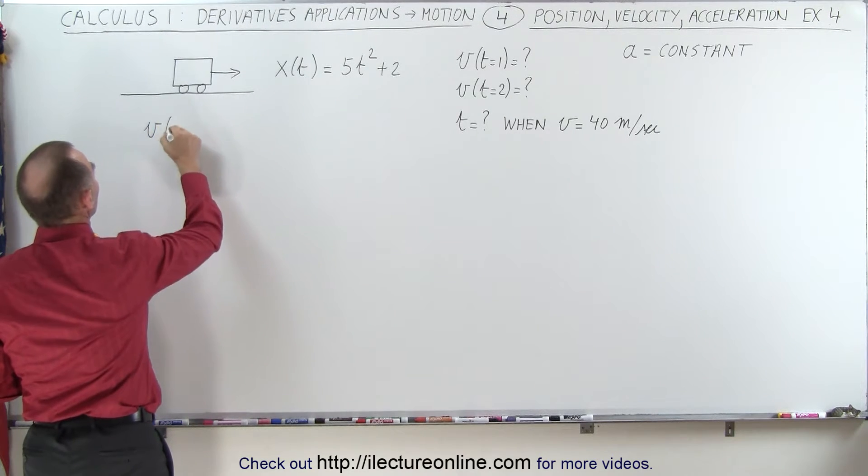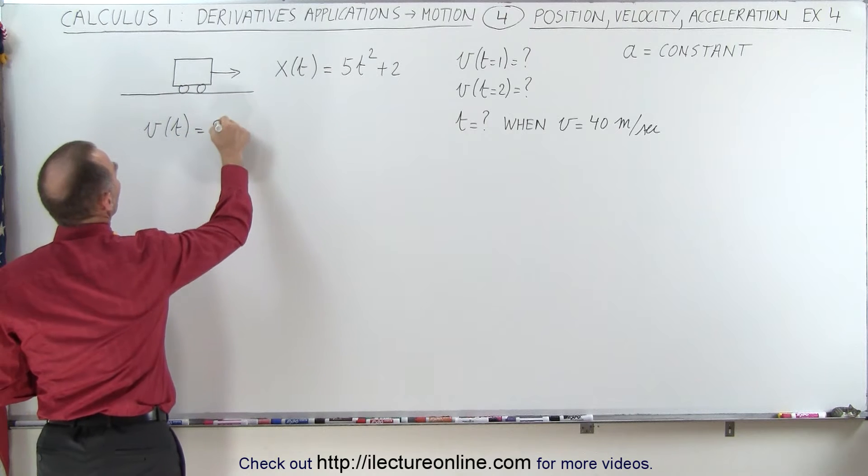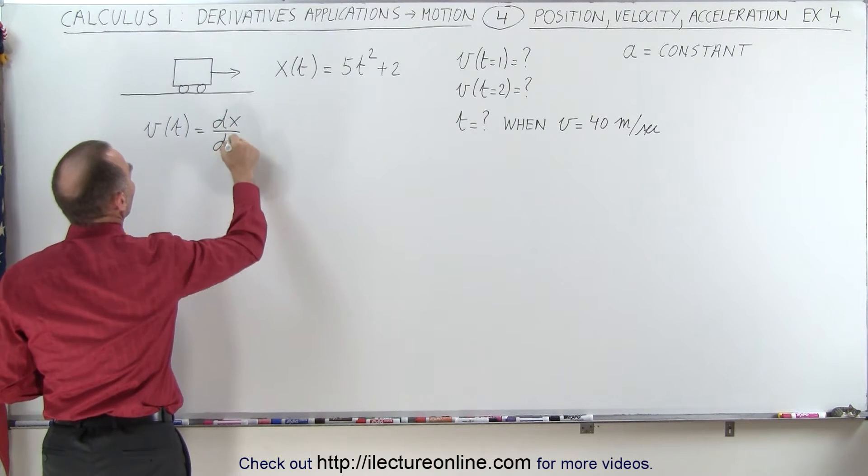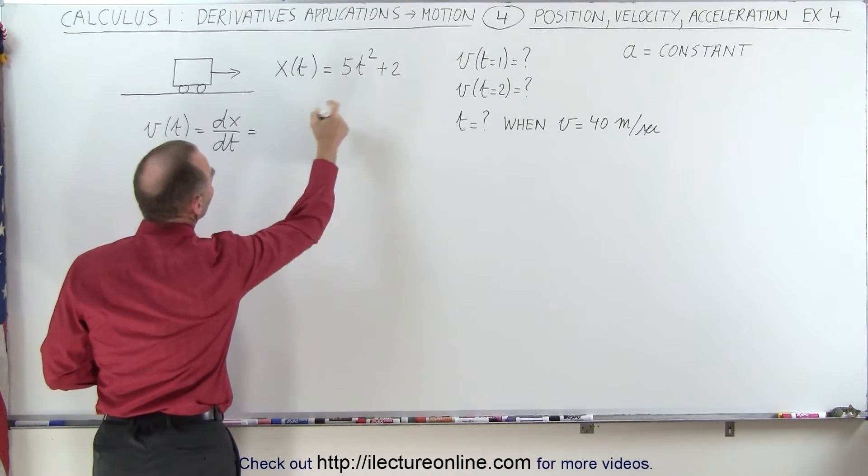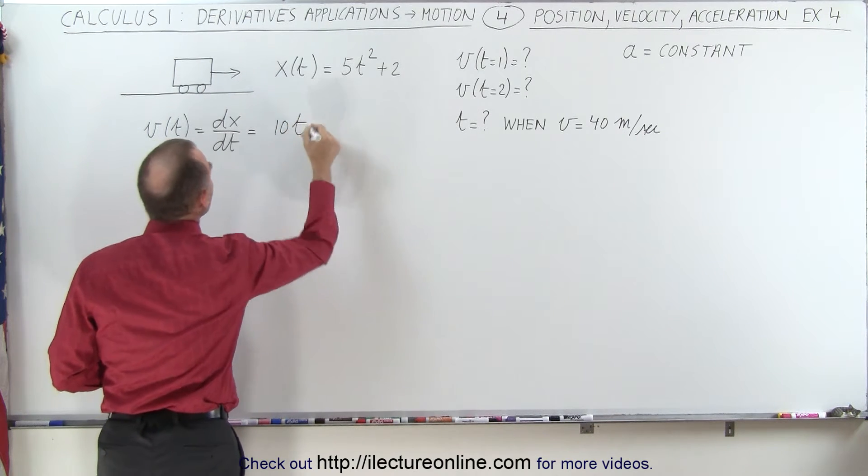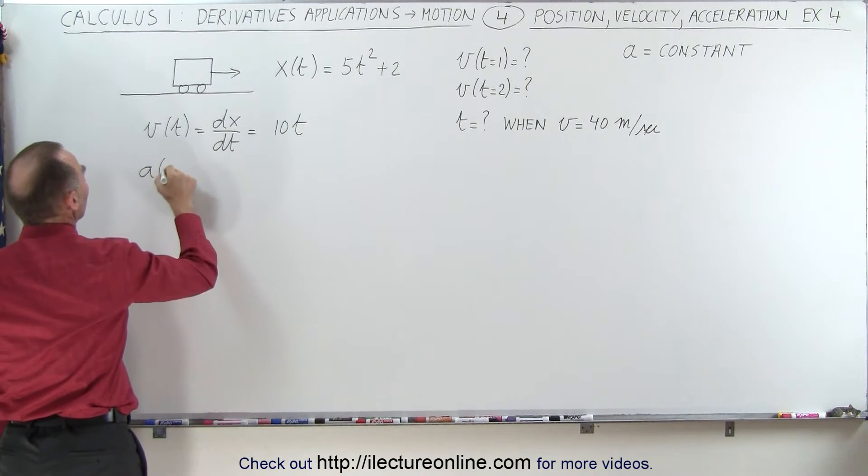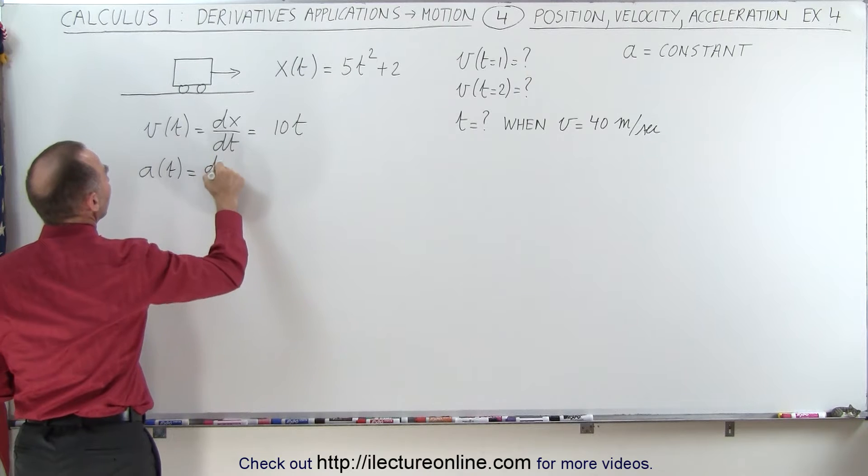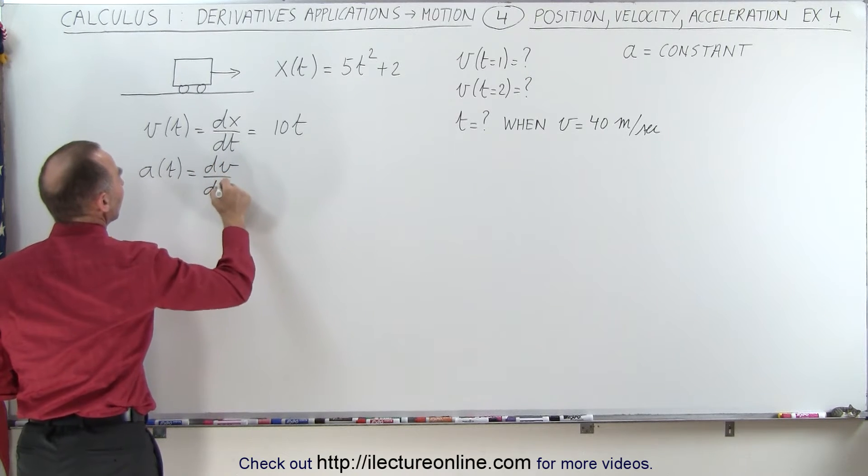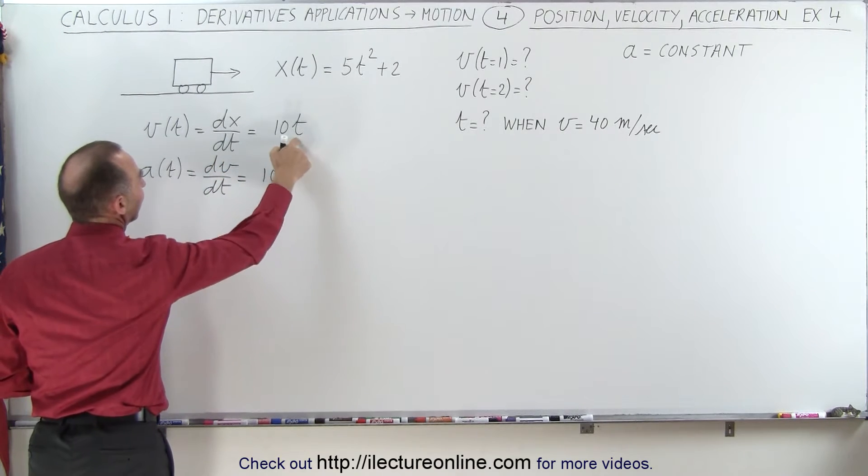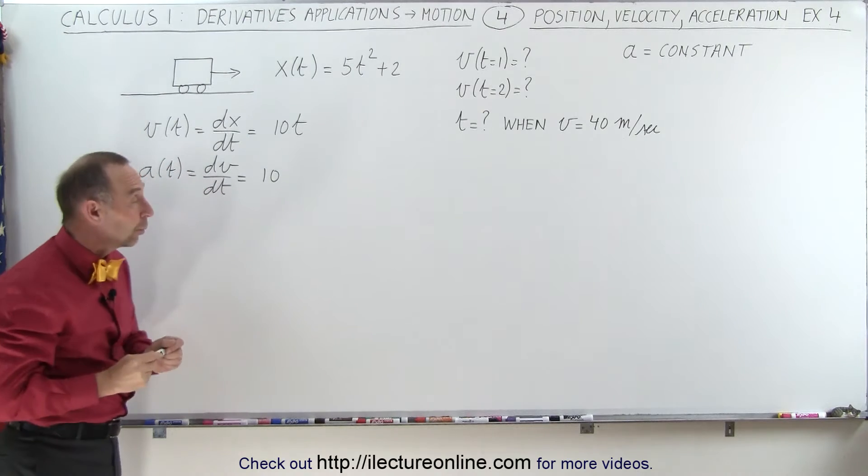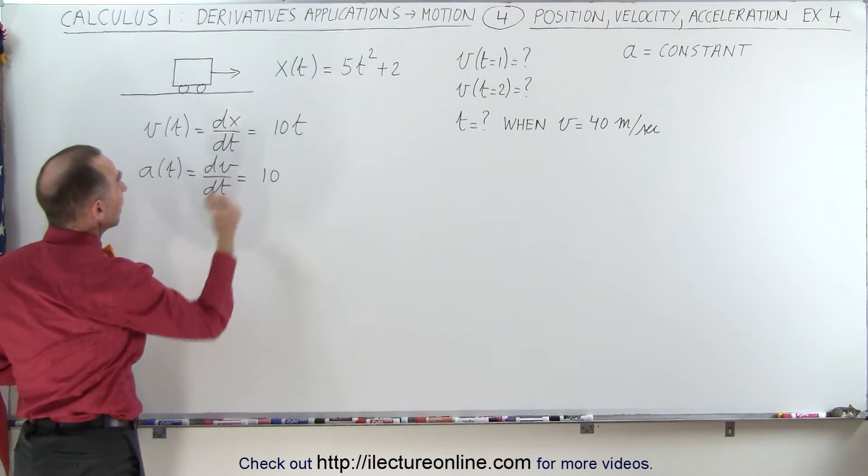The velocity as a function of time is equal to the derivative of the position as a function of time, which is equal to 10t. And then acceleration as a function of time, which is the derivative of the velocity as a function of time, is going to be equal to 10. Derivative of 10t is 10, which shows that the acceleration indeed is a constant.